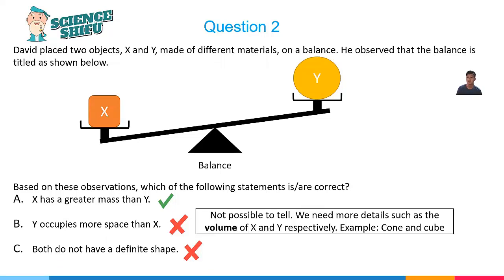And from there we can determine if Y did indeed occupy more space than X. Always remember that this whole question here only has a balance beam. If the beam is tilted, that means you're trying to measure the mass or compare the mass. To find the volume or to find if an object occupies more space or not, we will need to measure the volume.